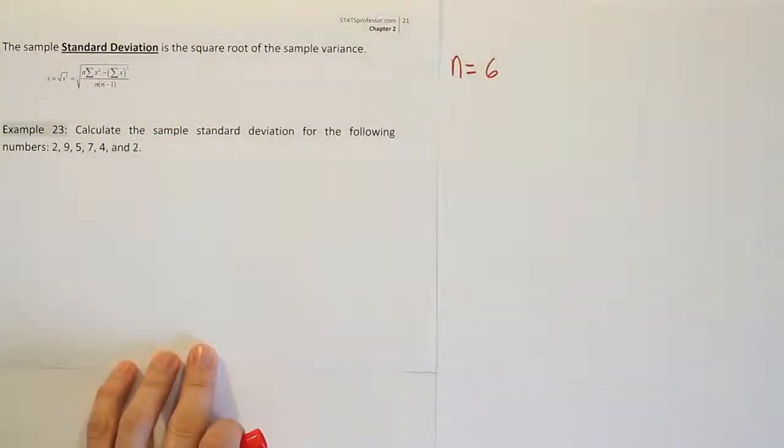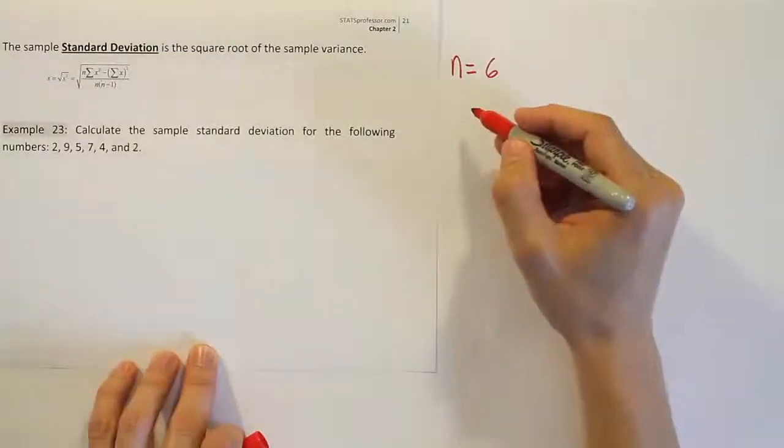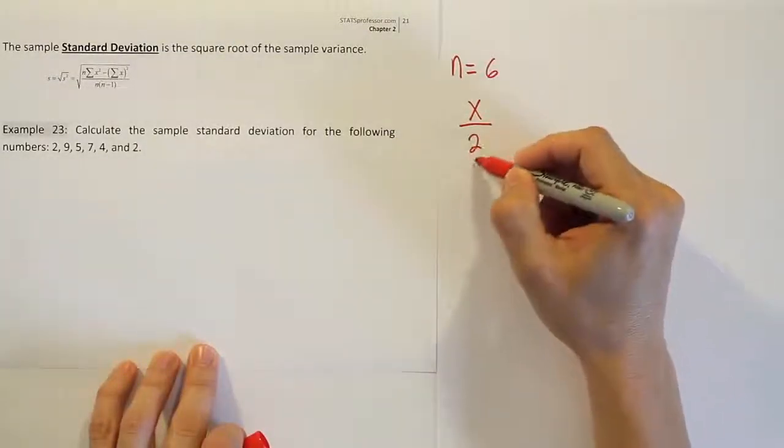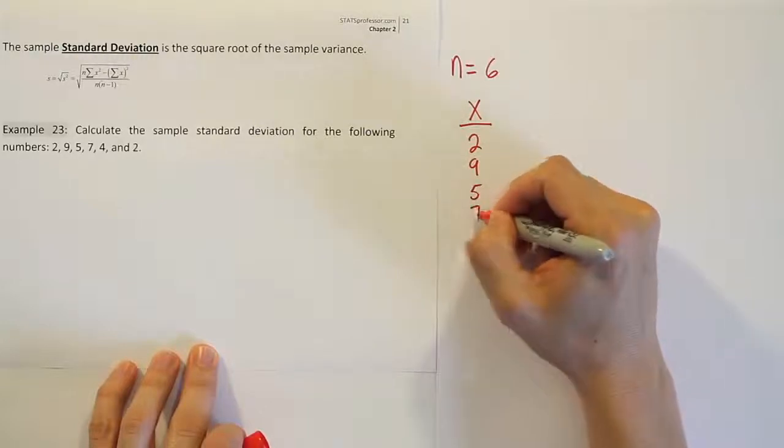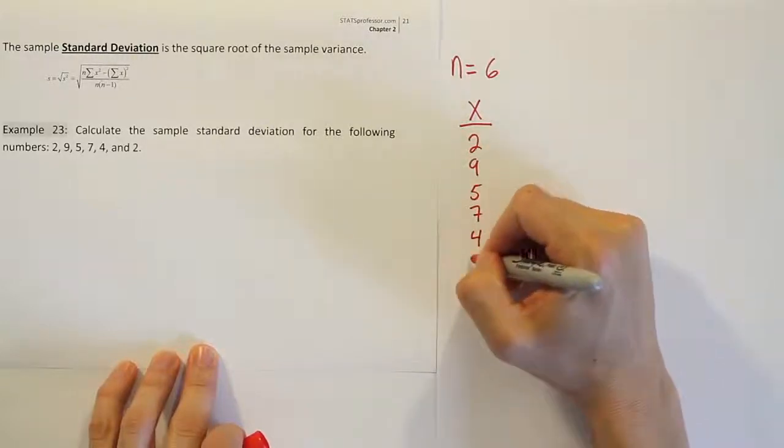The next thing you want to do is take the values that were given to you and put them in a column called x. So I have 2, 9, 5, 7, 4, and 2.